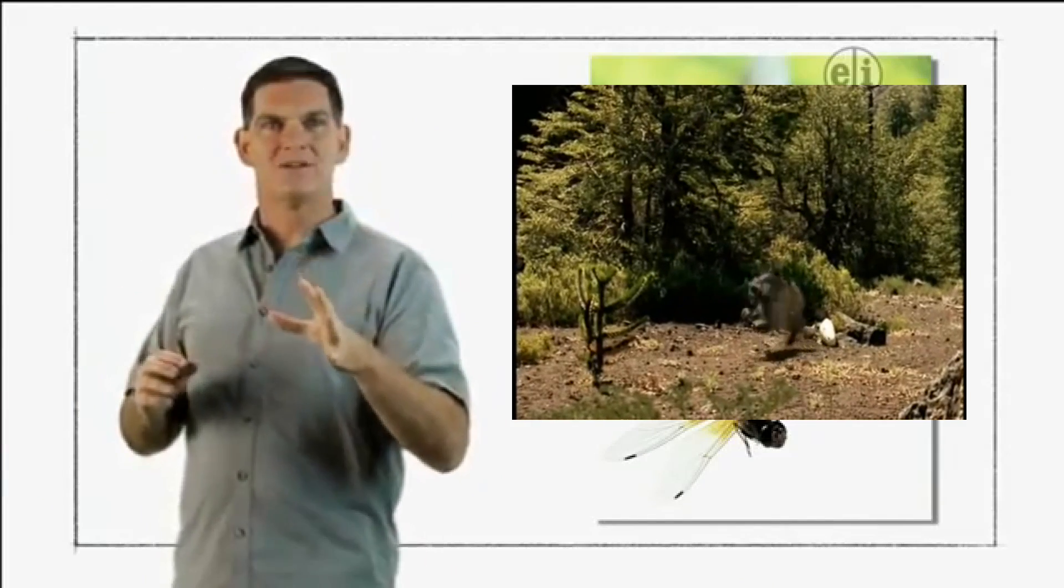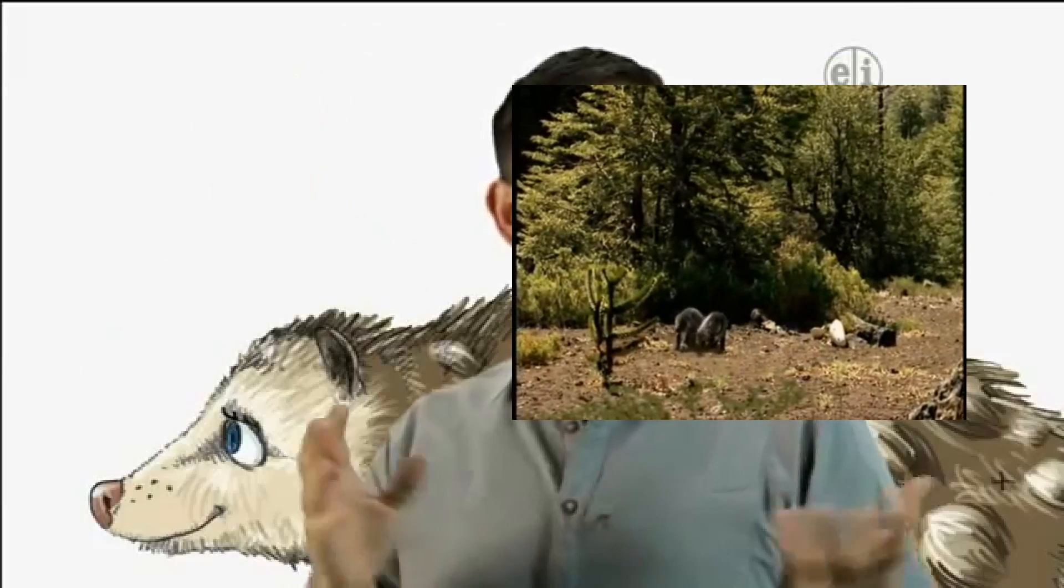So whenever you see a mammal, maybe a neighborhood cat, a squirrel, just think, they all had relatives living millions of years ago during the time of the dinosaurs.